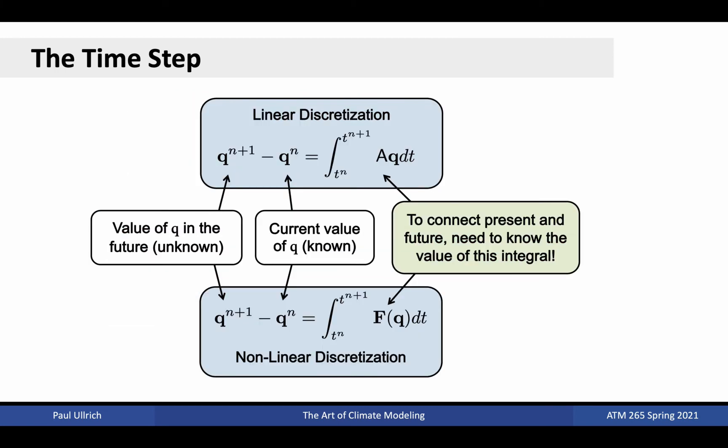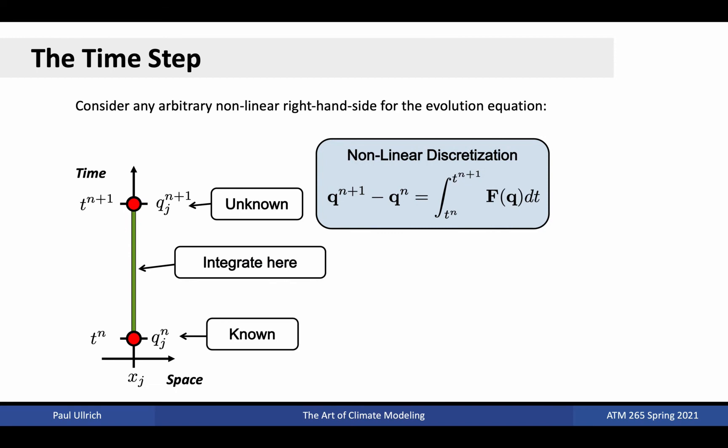We assume that all information is known at time n. That is, we know the current state of the system and can calculate spatial derivatives over that state using an appropriately chosen discrete derivative. Our goal will then be to obtain the state of the system at time n plus 1, the next time step. To do so, we'll need to estimate this integral using only known information.